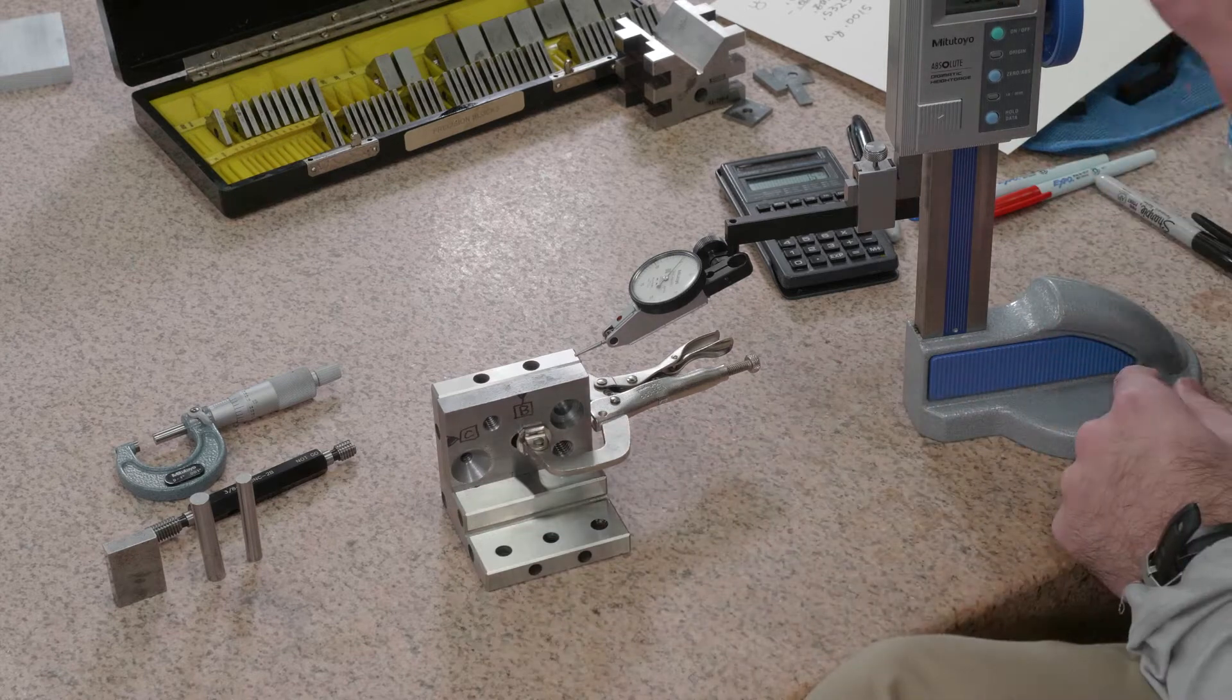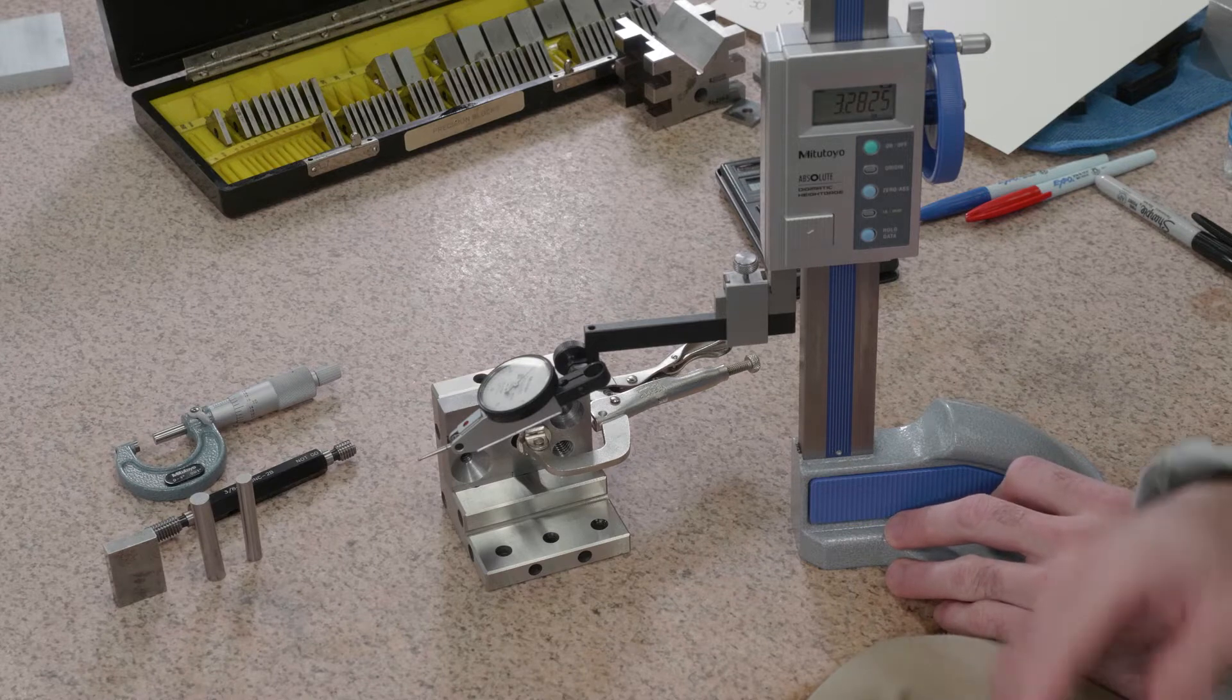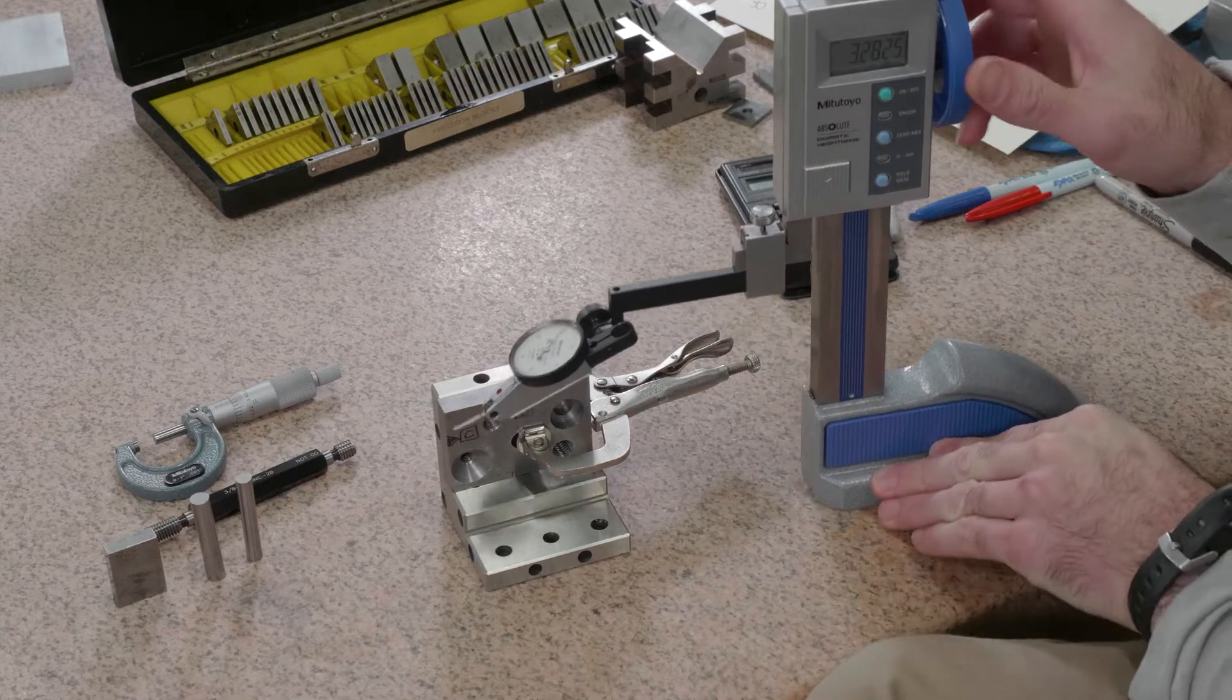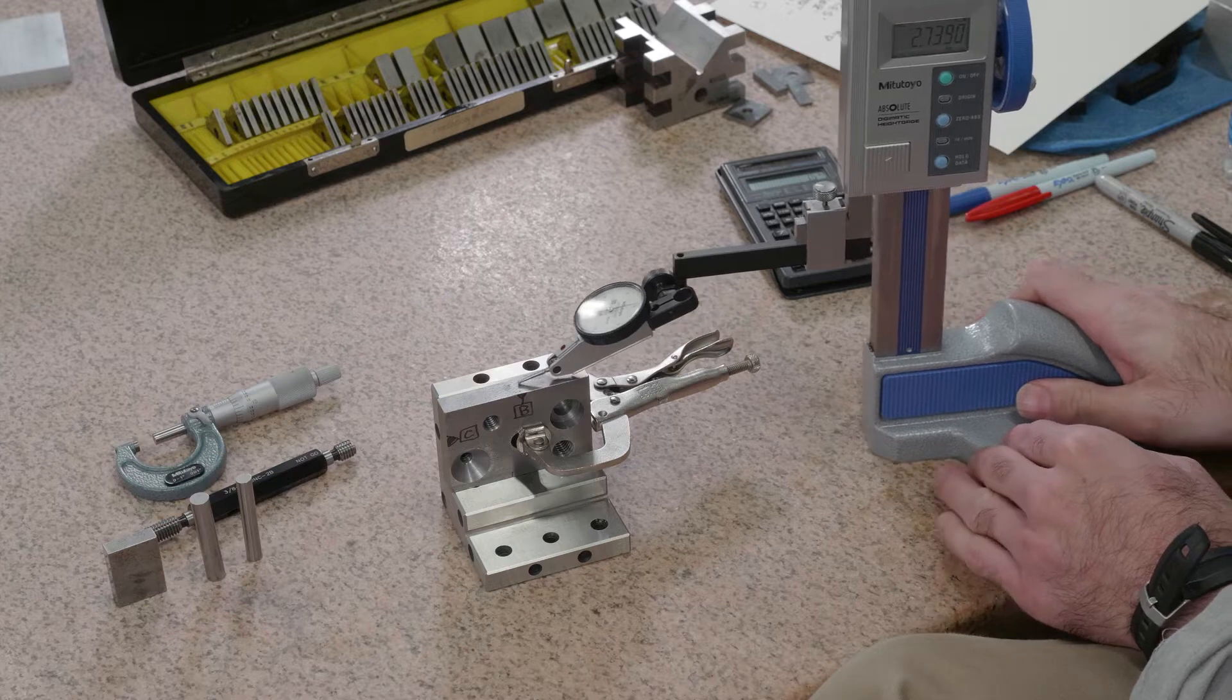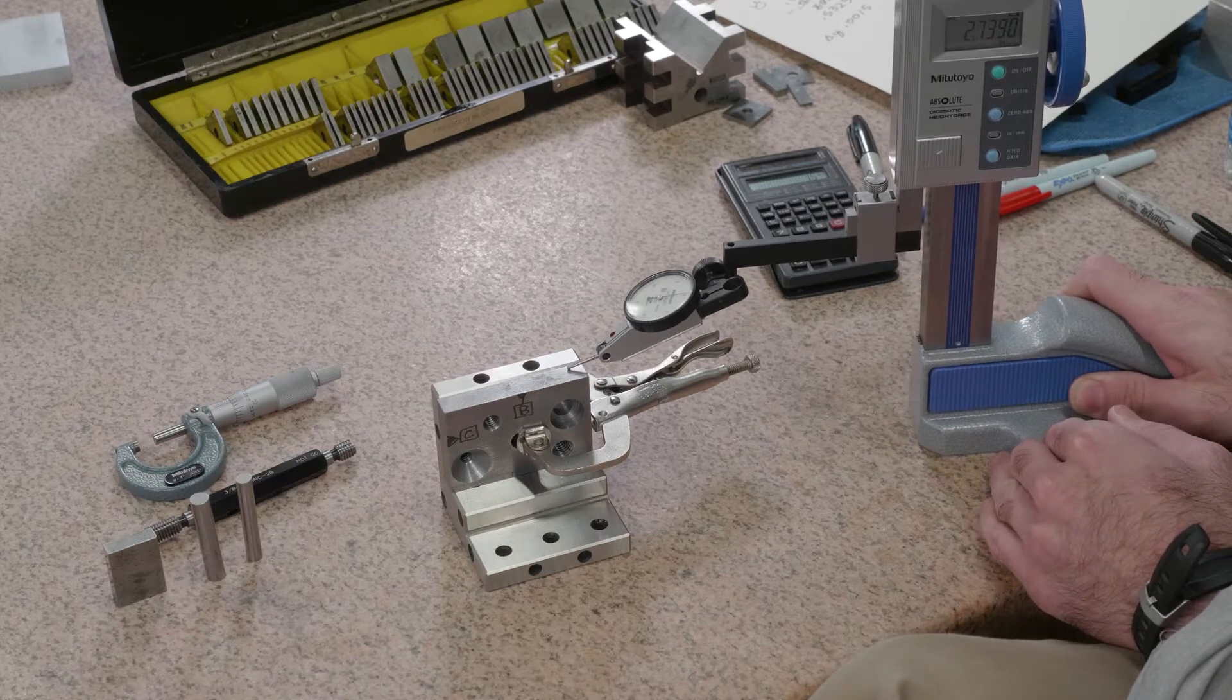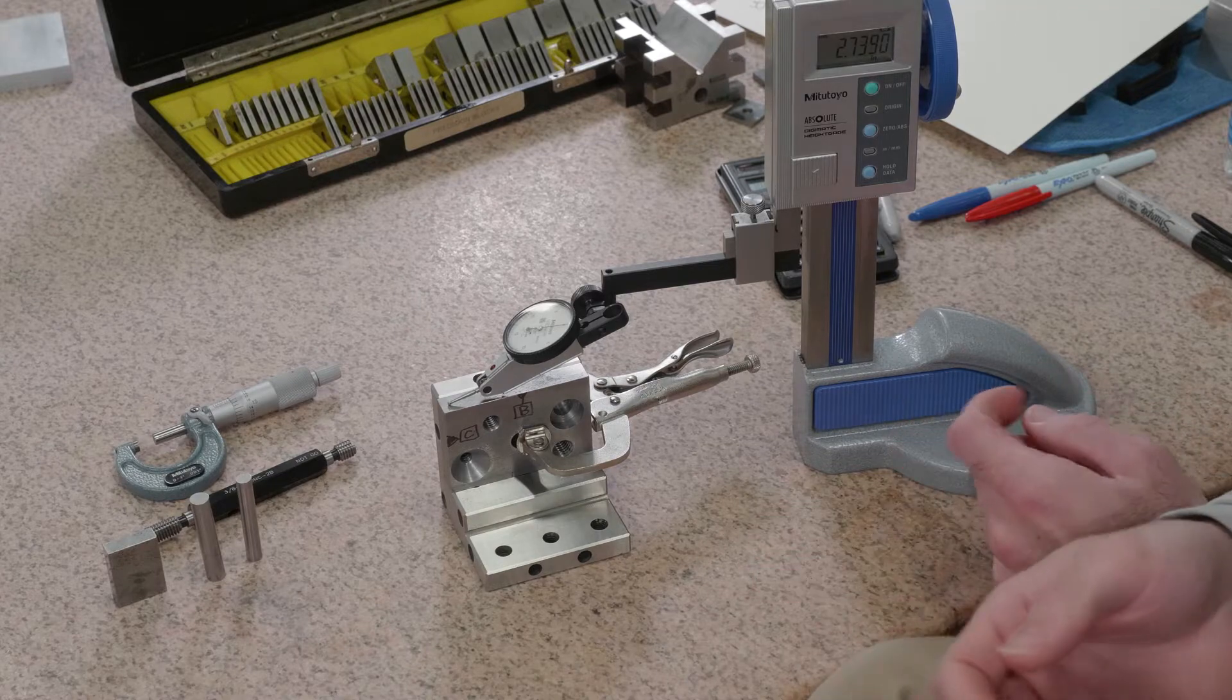Now to check datum B, I do not need to read this number up here on the height gauge. It does not matter at all. There's no location involved with this number. So I'm just going to lower it down until I get a zero on my indicator. And then I'm going to sweep the surface. And I'm going to check my indicator as I'm sweeping. That surface is good to within about one thousandths, maybe two thousandths. So that's all there is to qualify that datum and that feature control frame.